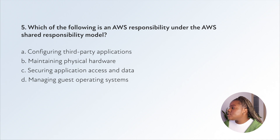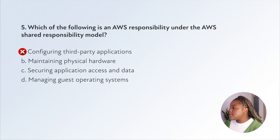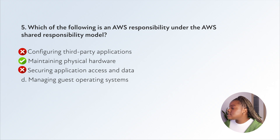Option A — configuration of third-party applications — is the user's responsibility, so that can't be right. Option B — maintaining physical hardware — is AWS's responsibility because you can't actually access their data centers, so that's the right answer. Option C — securing application access and data — is security in the cloud, the user's responsibility. Option D — managing guest operating systems — AWS does not manage guest operating systems; they manage host operating systems.